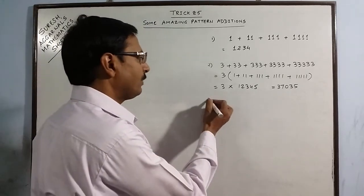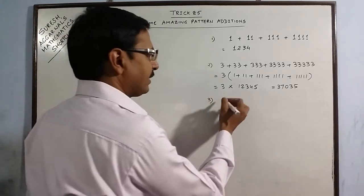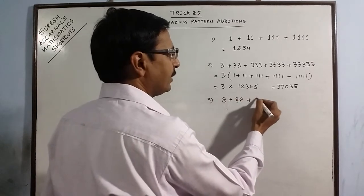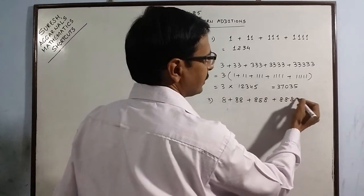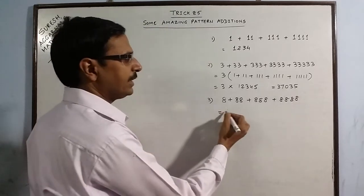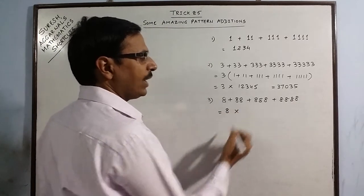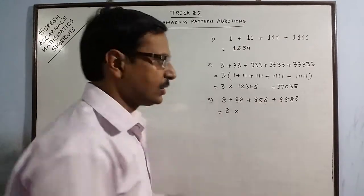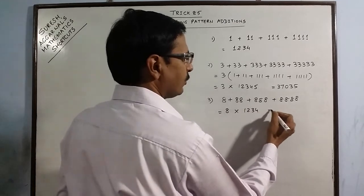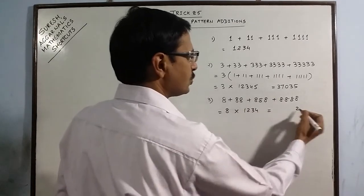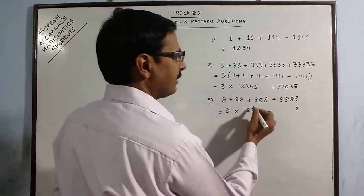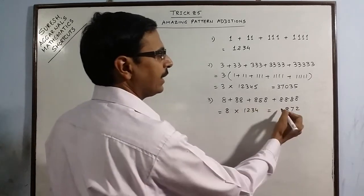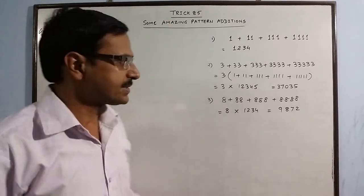One more example: take eights — 8 + 88 + 888 + 8888. Eight is common, and you have 1 + 11 + 111 + 1111 left, which is four ones giving 1234. So find the product 8 × 1234: 8×4=32 write 2 carry 3; 8×3=24+3=27 write 7 carry 2; 8×2=16+2=18 write 8 carry 1; 8×1+1=9. So 9872 is your required sum.